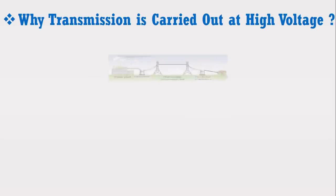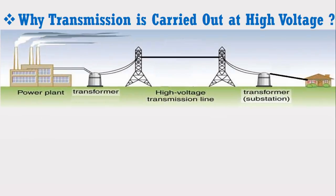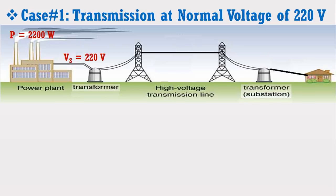Consider a simple power system consisting of a generating station which supplies power to the distribution side through a transmission line. Suppose 2200 watt of power is to be transmitted through the transmission line to the load. Now we are going to consider two cases. In the first case, we are not going to increase the voltage and will try to supply this power through normal 220 volt. Suppose the transmission line has a resistance of 5 ohms.